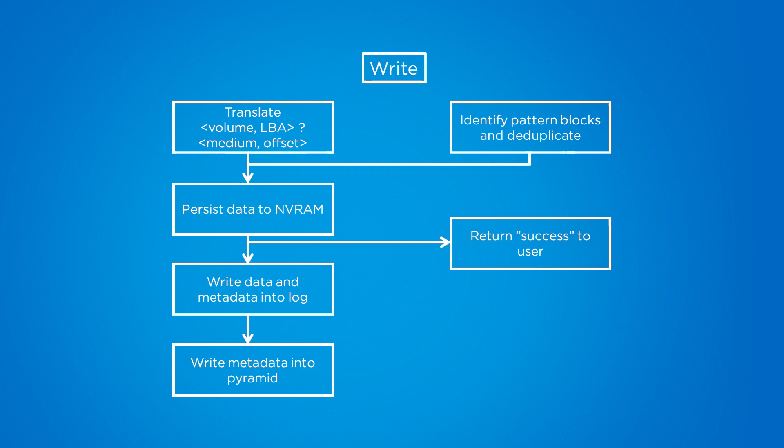On the write side, incoming blocks are translated to the corresponding volume and LBA values, which are stored in the medium table. Pure will also attempt to do pattern matching at this point on those blocks in order to deduplicate them. However, this is not an inline process. Instead, this process will be run inline when it can be, and if the system is above a certain CPU threshold, it will defer the pattern matching until the next time garbage collection runs.